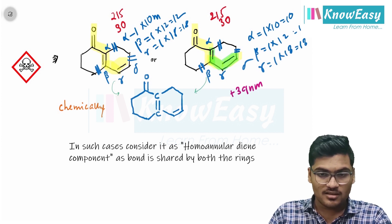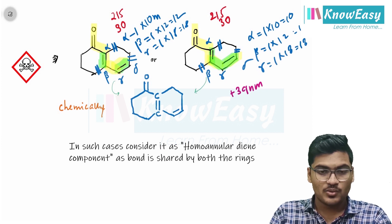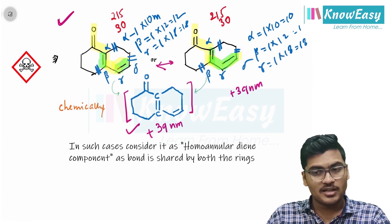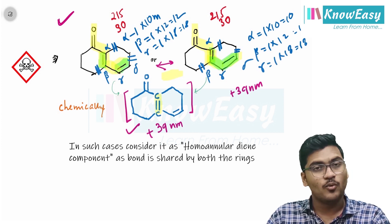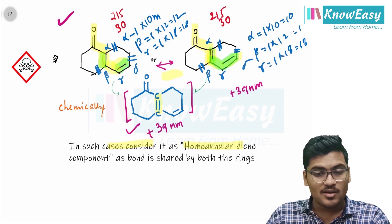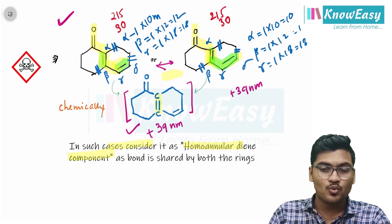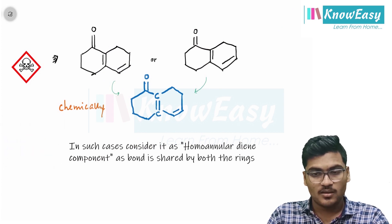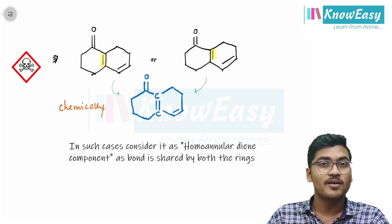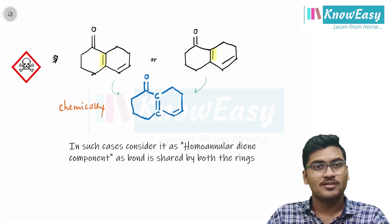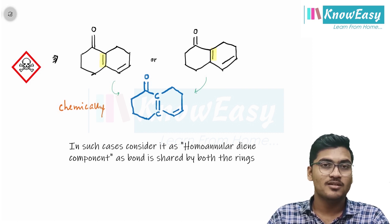In this structure, two double bonds are present in the same ring, so we take a value of plus 39 nanometers. In another representation, this double bond and this double bond lie in different rings — but chemically both structures are the same because the double bond is shared by both rings. In such cases, consider both examples to have a homoannular diene component, so you will add plus 39 nanometers in both representations.